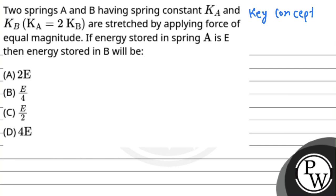The key concept involved in this question is, potential energy stored in a spring is U equals to half KX squared where K is the spring constant and X is the amount of distance the spring is stretched.